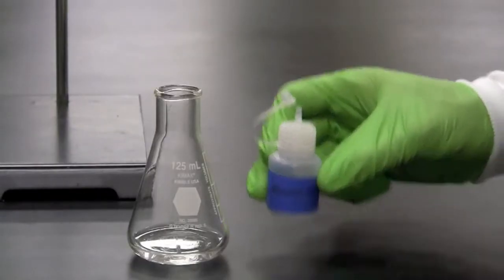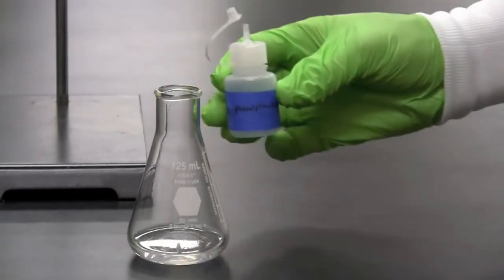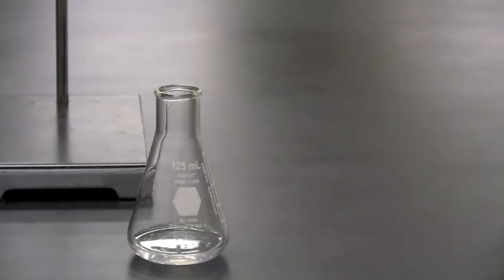Add two drops of phenolphthalein to the hydrochloric acid solution. Gently swirl the solution to mix.